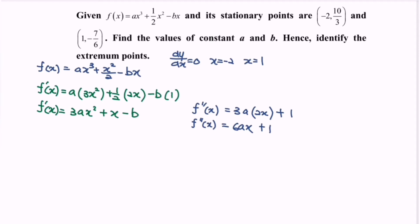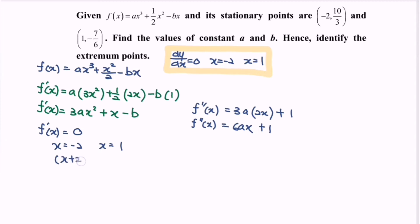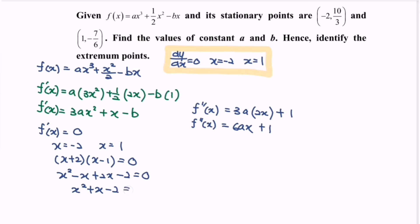Next, we find the critical values. The information given is that f prime of x equals zero gives x equals negative two and x equals one. So reversing the process: (x + 2)(x - 1) equals zero. Expanding: x squared minus x plus two x minus two equals zero, giving x squared plus x minus two equals zero.